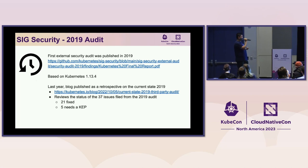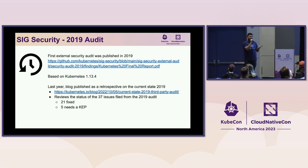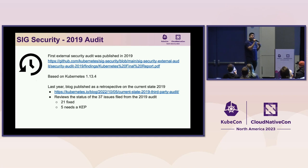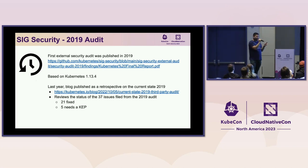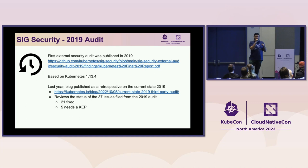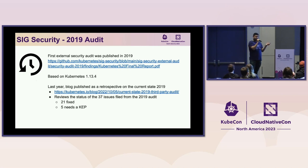We're now on 1.28, so Kubernetes moves fast. Last year, with help from a number of SIG Security contributors, we released a blog post that was a retrospective: what happened since the 2019 security audit, where are we at, what have we done, and what do we need to do? It turns out we still need to do several things. Out of the 2019 security audit there were 37 findings; issues were created, 21 are fixed, and 5 are deemed to need a Kubernetes Enhancement Proposal — meaning it's more than just a bug fix or patch, there's an actual change to the features of Kubernetes. We have 21 from the 2019 audit that still need to be fixed.